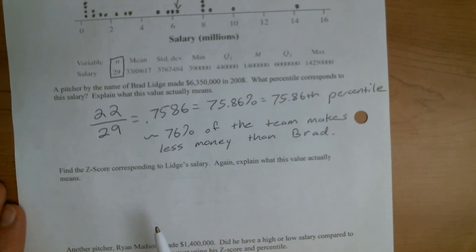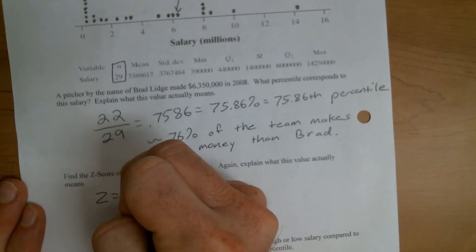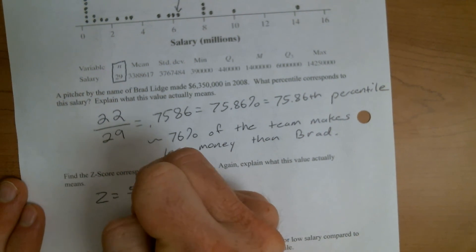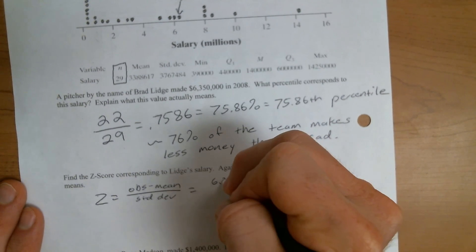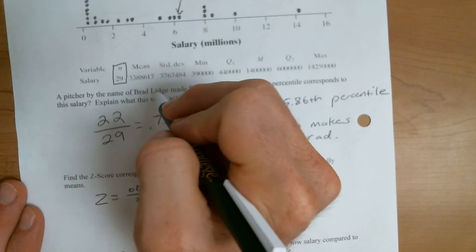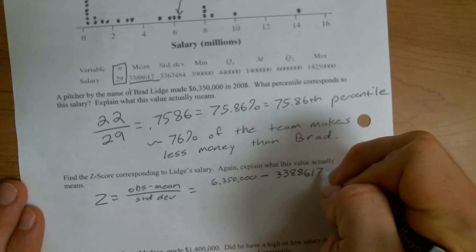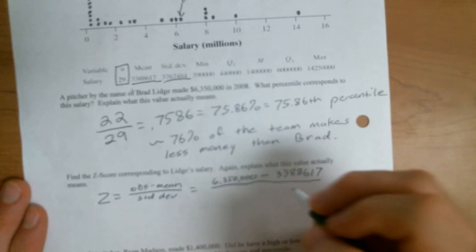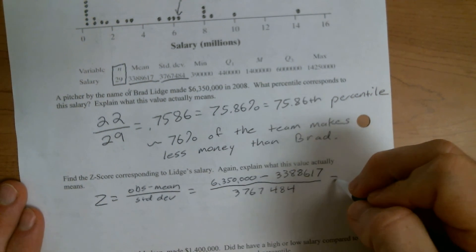Next, find the z-score for Lidge's salary. So again, z equals observation minus mean divided by standard deviation. The observation is Brad's salary. So 6,350,000. The mean we can get right here. So that's 3,388,617. And the standard deviation we can get right here. So that's 3,767,484. And then once you have those numbers, let me just type them in here.